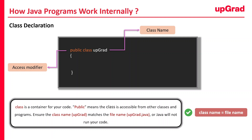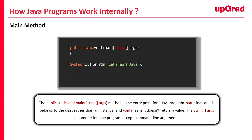Now that we have our class set up, let's move on to the entry point of a Java program — the main method: public static void main(String[] args). This is where your program starts. Java looks for this method when it starts running your program. Public is an access modifier, which means the method can be called from anywhere, even outside the class. The static part means it belongs to the class and not to the objects of the class, so Java doesn't need to create an object to run it. Void means it doesn't return anything. The String args parameter allows the program to accept command line arguments if any are provided when the program runs.